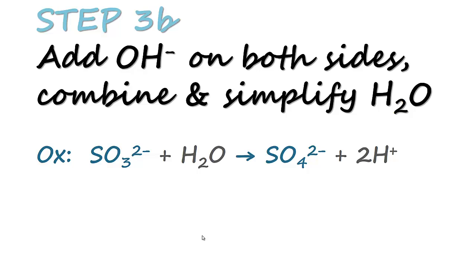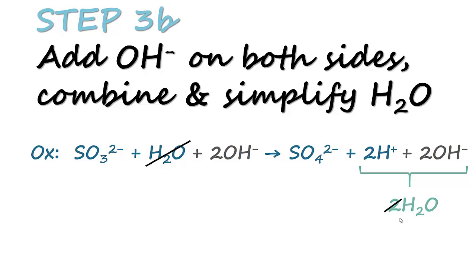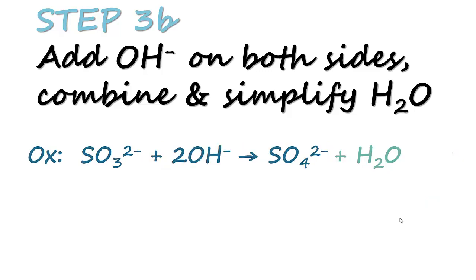The second part of step three: for every H⁺ added to the equation, we need to add an equivalent number of OH⁻ on both sides. In the oxidation equation we have two H⁺, so we add two OH⁻ on both left and right. After adding OH⁻ on both sides, we combine H⁺ and OH⁻ to form water, giving two H₂O on the right hand side. Then we simplify water: one H₂O on the left and two H₂O on the right simplifies to one H₂O on the right. The rewritten oxidation equation is: SO₃²⁻ + 2OH⁻ → SO₄²⁻ + H₂O.